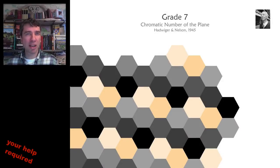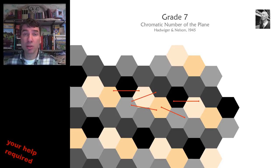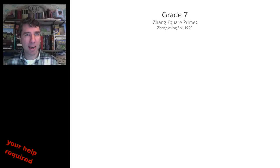The chromatic number of the plane is an unsolved problem from 1945. You have to find the fewest number of colors to paint the plane so that whenever you drop your paintbrush, the two ends of the paintbrush land on different colors. So for example, this uses 7 colors. Is this as good as you can do, or can you get less?